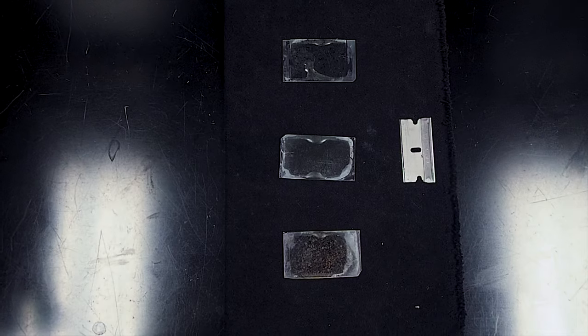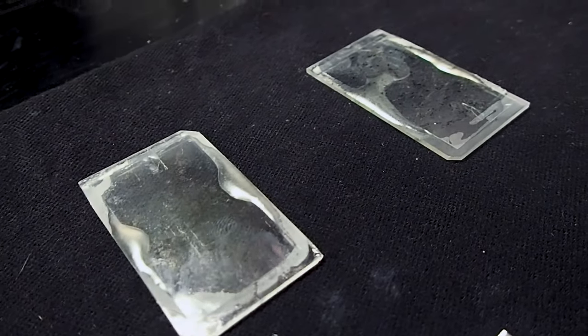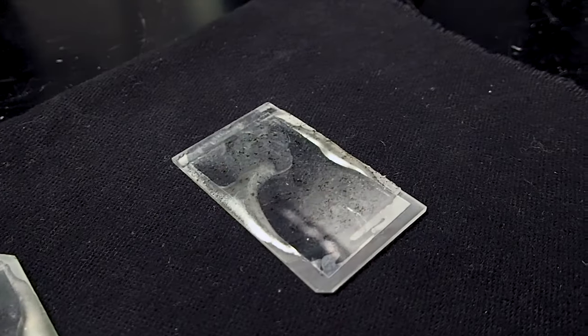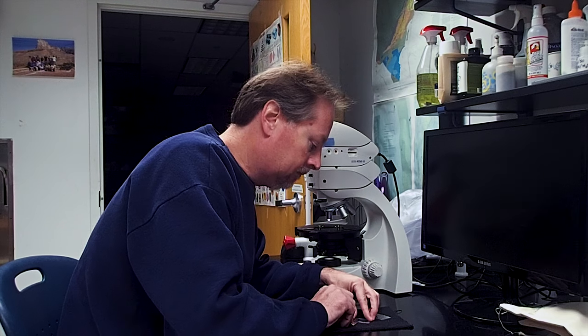After the slide has cured, there may be extra epoxy that was squeezed out from the cover slip and has hardened on the top, sides, or bottom of your thin section. If this occurs, use a razor blade to carefully trim or scrape away the excess epoxy.